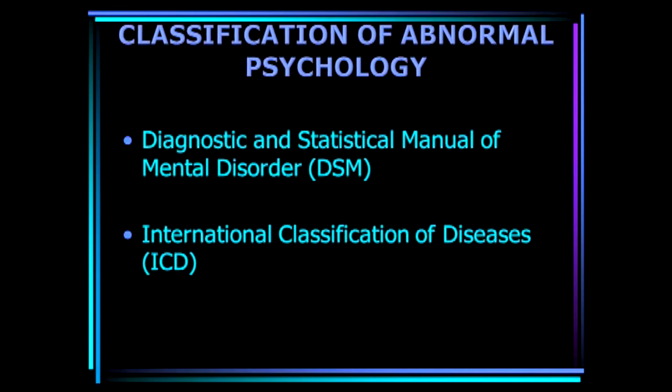To give you an overview of the course contents, the first unit will start with the introduction as well as classification of abnormal behavior. It takes you into a historical perspective of abnormal psychology and then moves on to the classification of psychological disorders. We are going to talk about two standard systems of classification: DSM-5, which is the latest classification, as well as ICD-10.